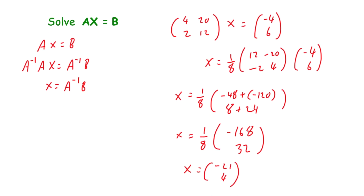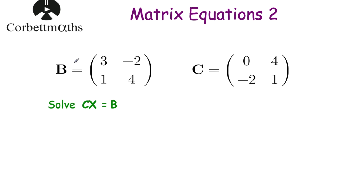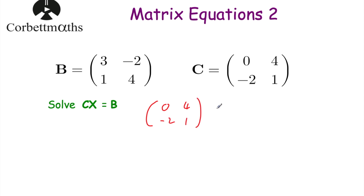Let's have a look at another example. Matrix B equals 3, negative 2, 1, 4, and matrix C equals 0, 4, negative 2, 1. We've been asked to solve the equation CX equals B. So we write: 0, 4, negative 2, 1 times X equals 3, negative 2, 1, 4.